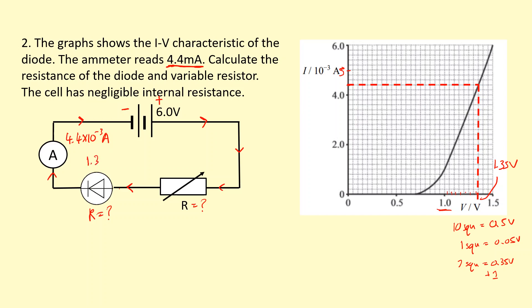So the diode has 1.35 volts across it. So that means I can figure out the voltage across the variable resistor, because it must add up to 6. So 6 minus 1.35 gives me 4.65 volts. Now that I know also I have the current through both of them, because that's the same. It's going to be 4.4 times 10 to the minus 3. I can apply Ohm's law to each one. So 1.35 divided by 4.4 times 10 to the minus 3, that gives me 307 ohms. And if I do 4.65 divided by 4.4 times 10 to the minus 3, that gives me 1,057 ohms.